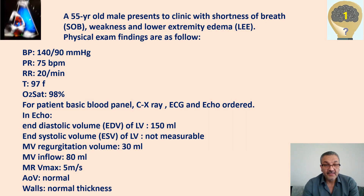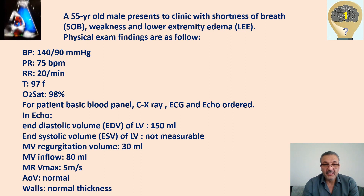For this patient, we did a basic blood panel, electrolytes and all those studies, plus chest X-ray and EKG, and we ordered an ECHO. In the ECHO, we found the following parameters: end-diastolic volume 150 mL.